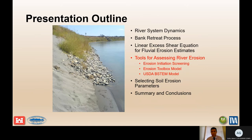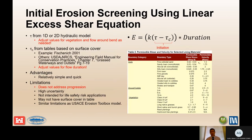Now we'll look at some tools for assessing river erosion: erosion initiation screening, the Erosion Toolbox model, and the USDA B-STEM model. For the screening method, you simply examine whether effective applied shear exceeds critical shear stress. Applied shear comes from 1D or 2D hydraulic models, adjusted for flow around bends and vegetation. Critical shear stress can come from tables such as Fischenich 2001 or USDA NRCS, based on surface cover, but those values must be adjusted for flow duration if it exceeds about two hours.